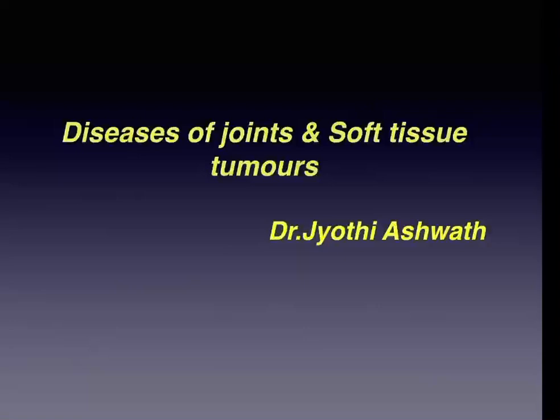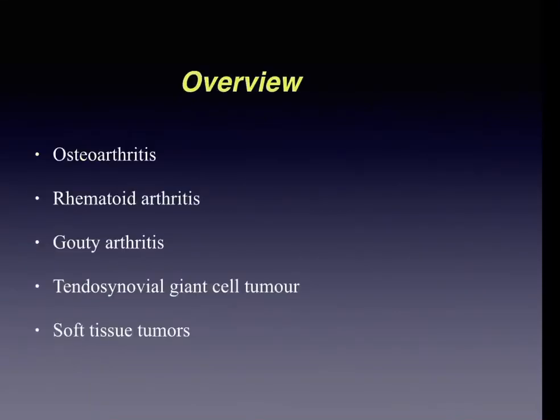Good morning. Today's class is about diseases of joints and soft tissue tumors. The main aim of this class is to discuss the etiopathogenesis, morphology, and clinical course of common diseases of joints and also soft tissue tumors.